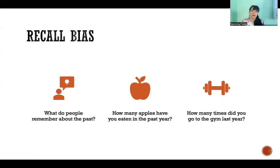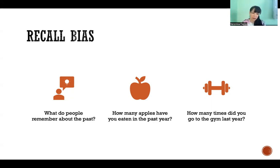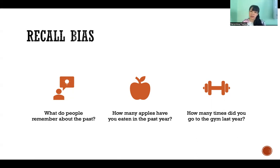Even if you go to the gym three times a week, you might be able to come up with a reasonable estimate, but you're still not going to be able to account for the times you were sick or the times you went an extra time. So that's the problem with recall bias. When we design research, it is best not to depend on participants to remember and report on things, because participants notoriously remember incorrectly and report incorrectly. Studies that depend on that type of data collection — we need to really question whether we can count on that data.